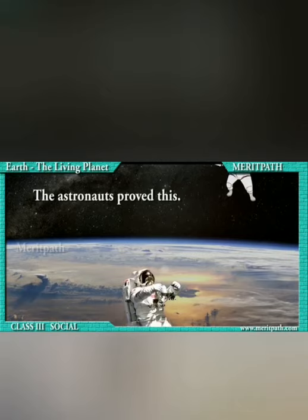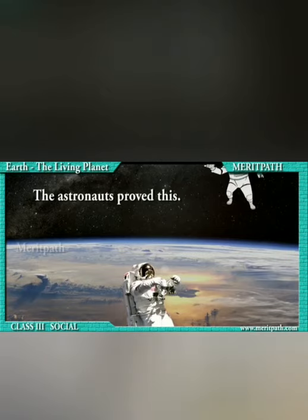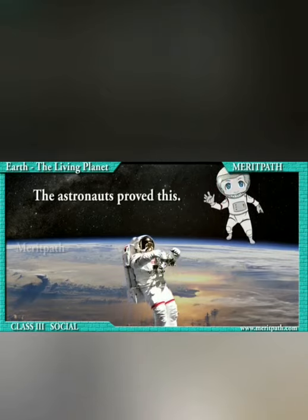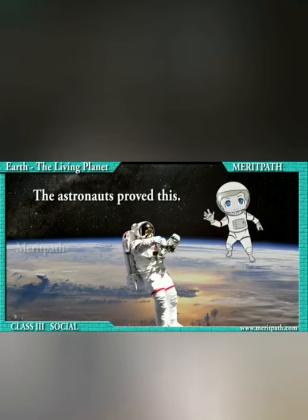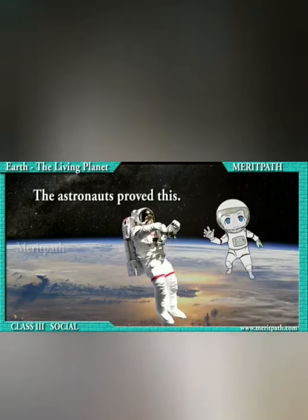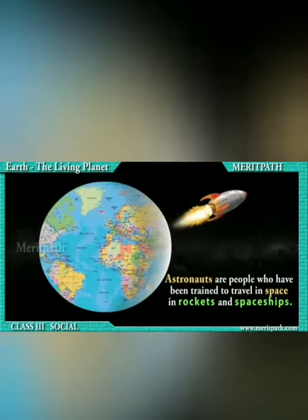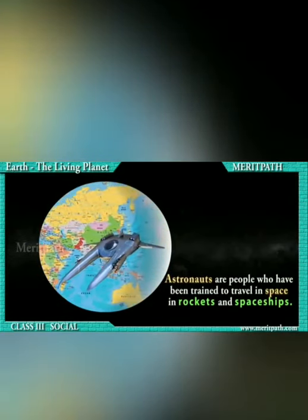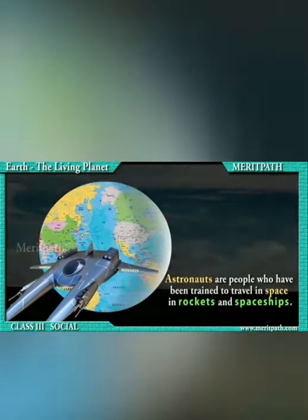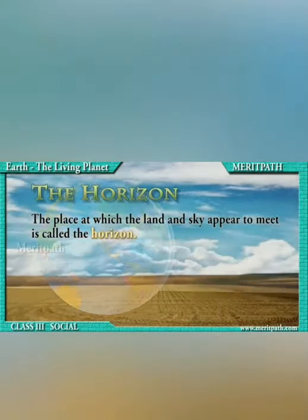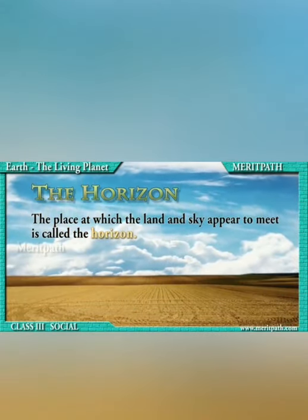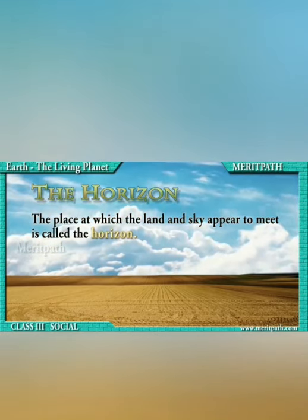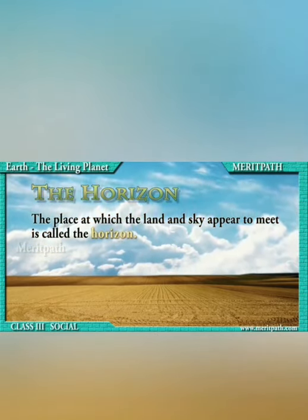Later, people trained to travel in space proved this right. These people are called astronauts. They travel in space through rockets and space ships. When we look at the land and sky from a distance, they appear to meet. This place is called a horizon.